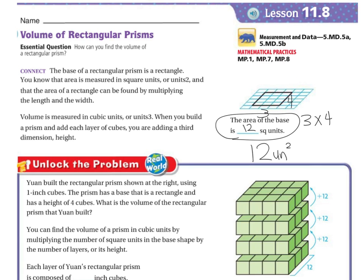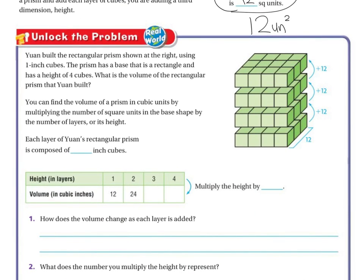Let's unlock the problem. One built a rectangular prism using 1-inch cubes. The prism has a rectangular base and a height of 4 cubes. What is the volume of the rectangular prism that One built? You can find the volume of a prism in cubic units by multiplying the number of square units at the base shape by the number of layers, or its height. We know the base is 4 this way and 3 this way. 4 times 3 is 12.